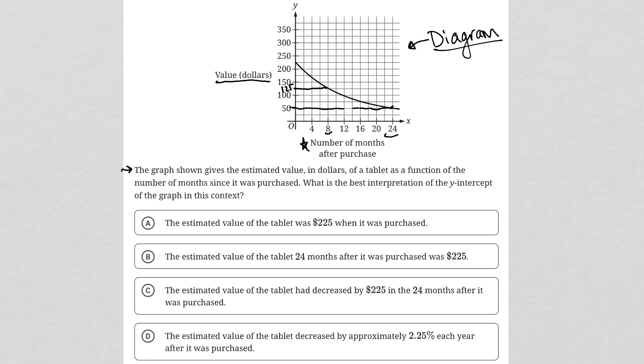So I think I understand how to interpret or read this graph. The question says, what is the best interpretation of the y-intercept? So our y-intercept is right here in red.